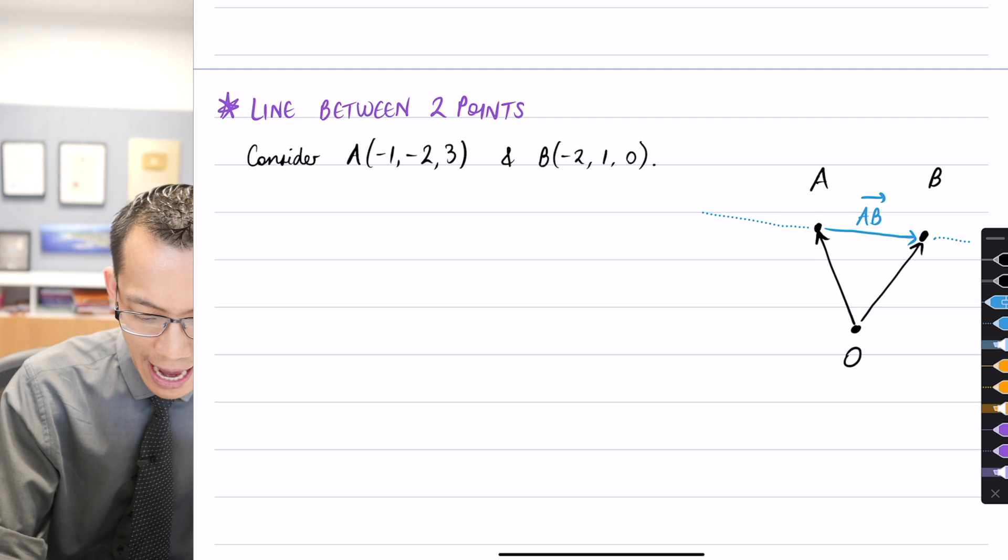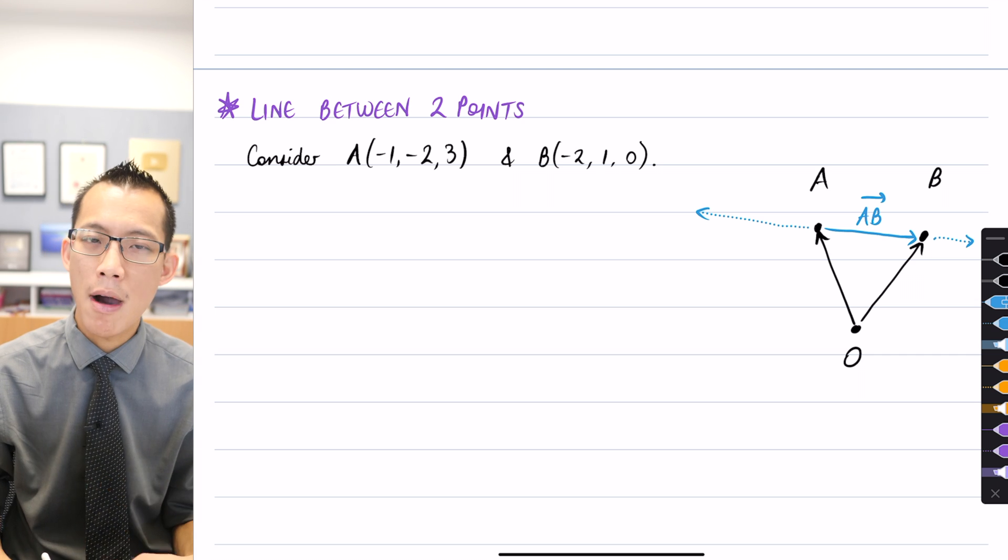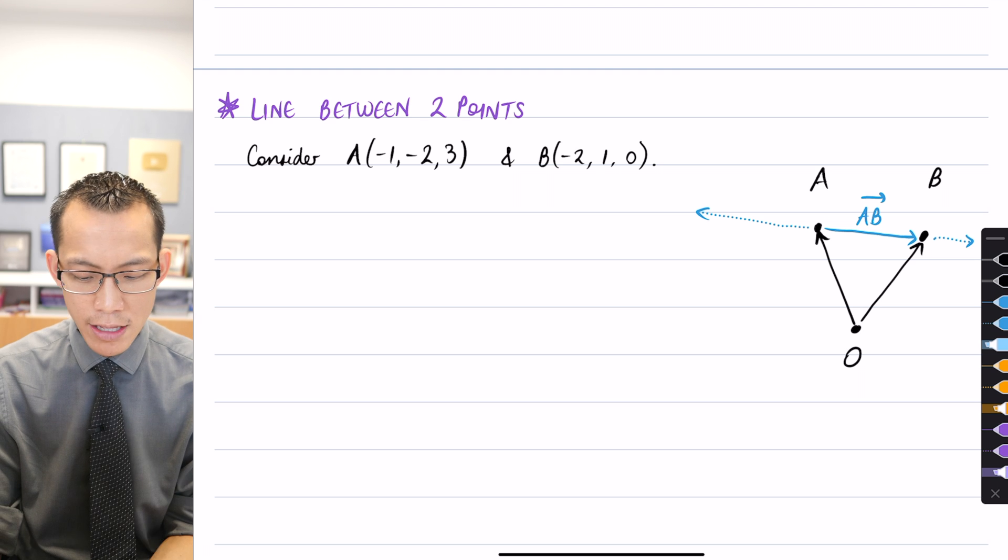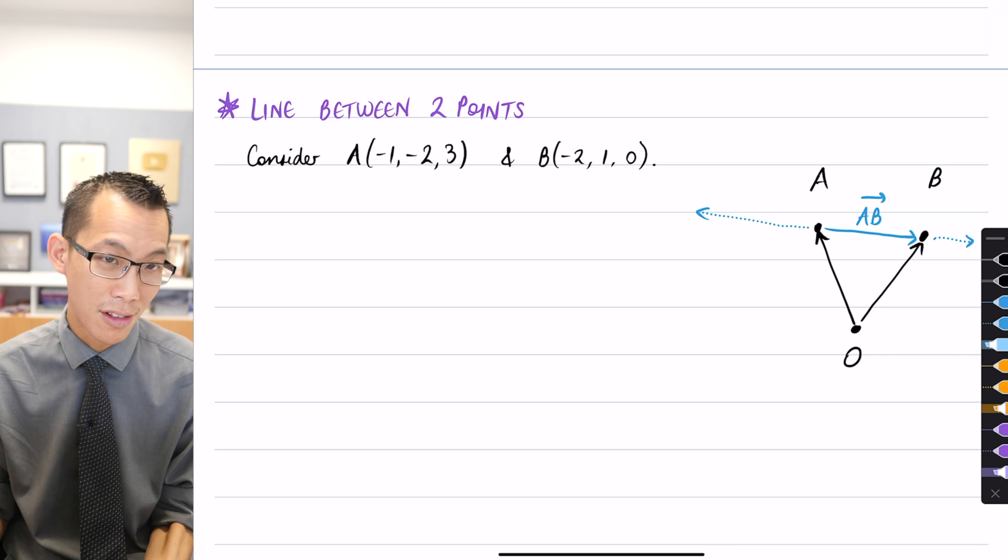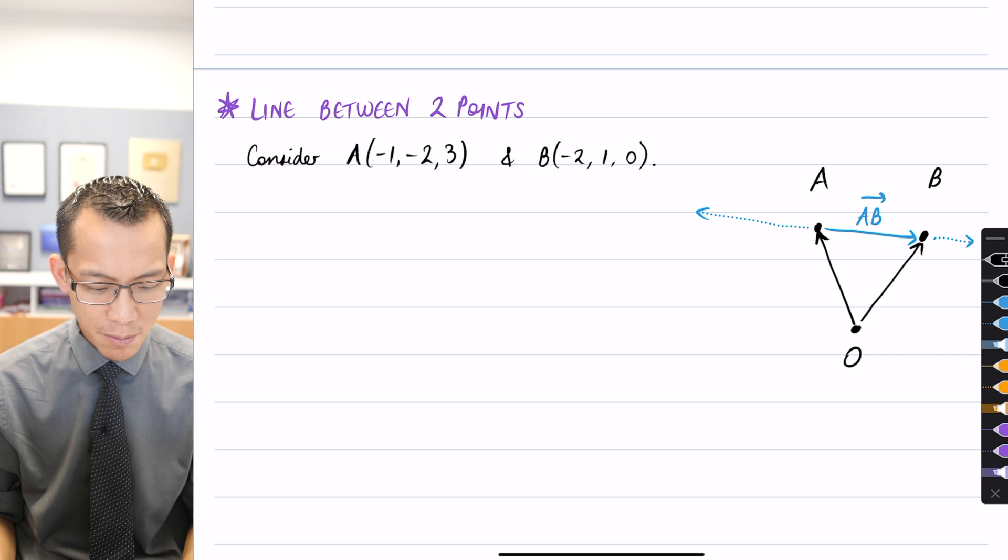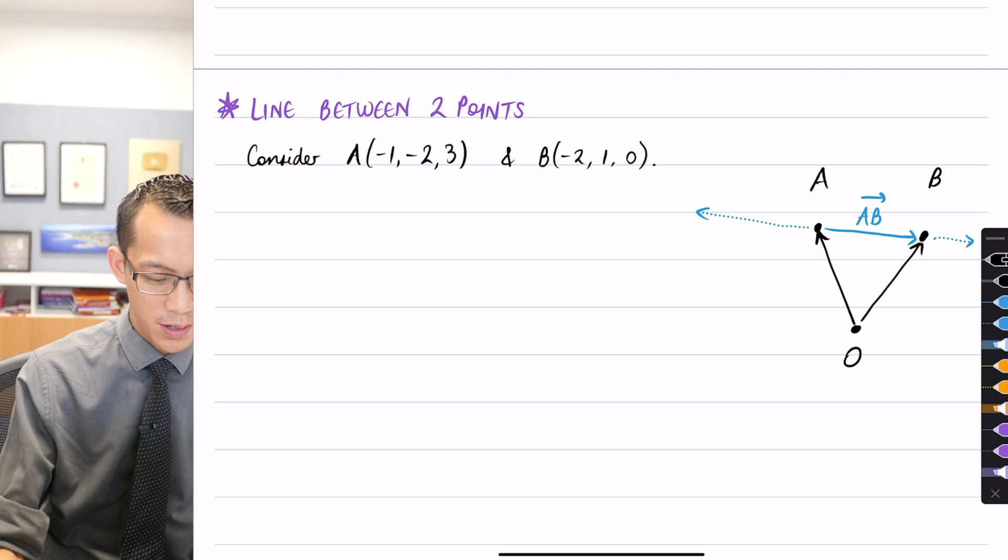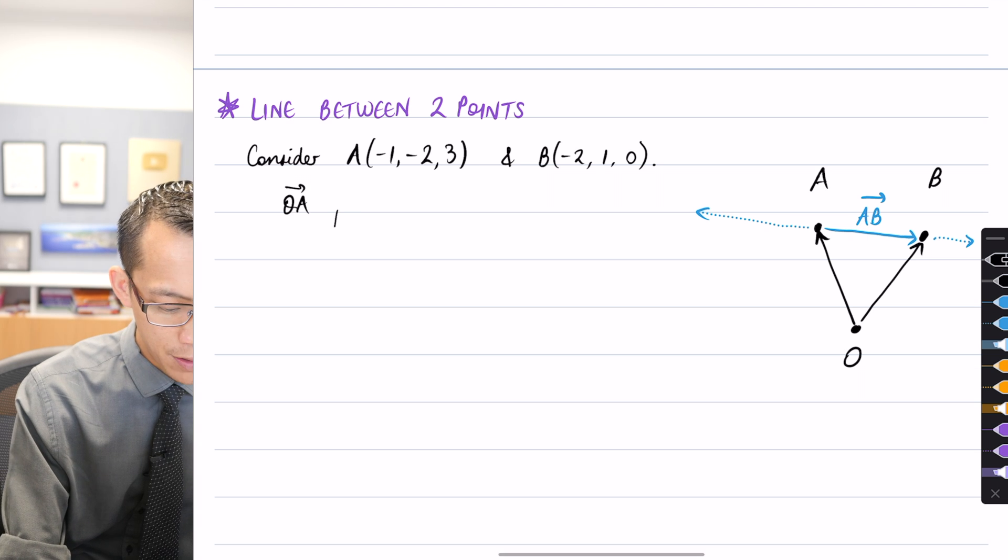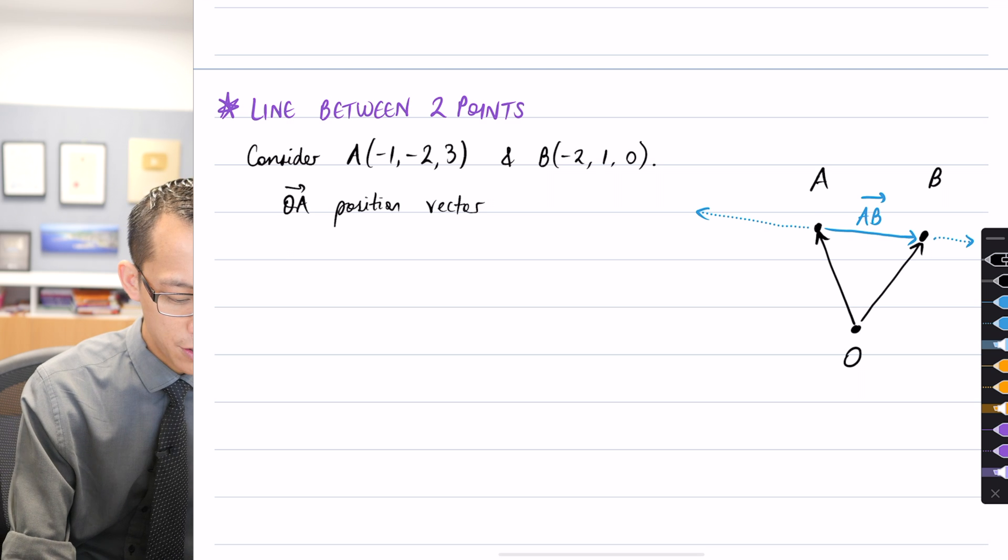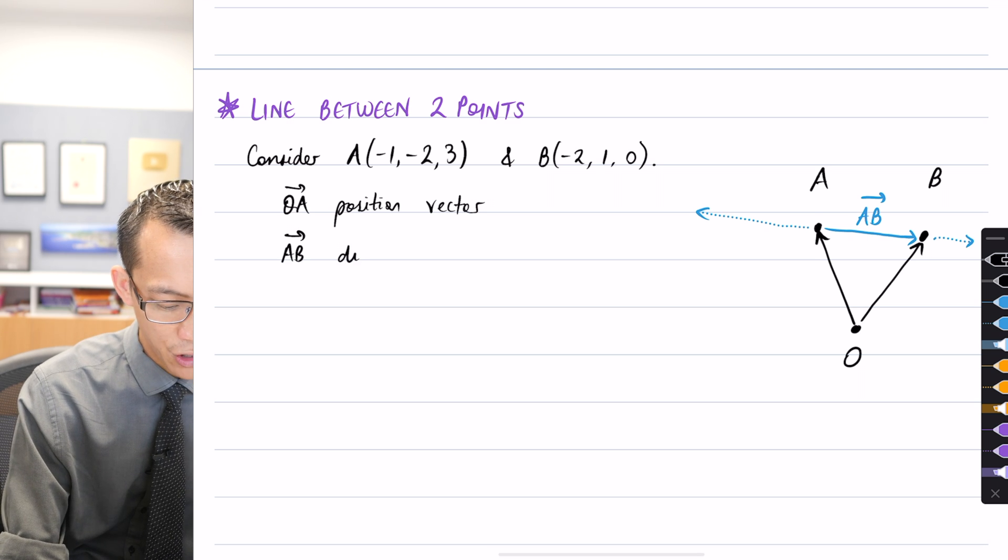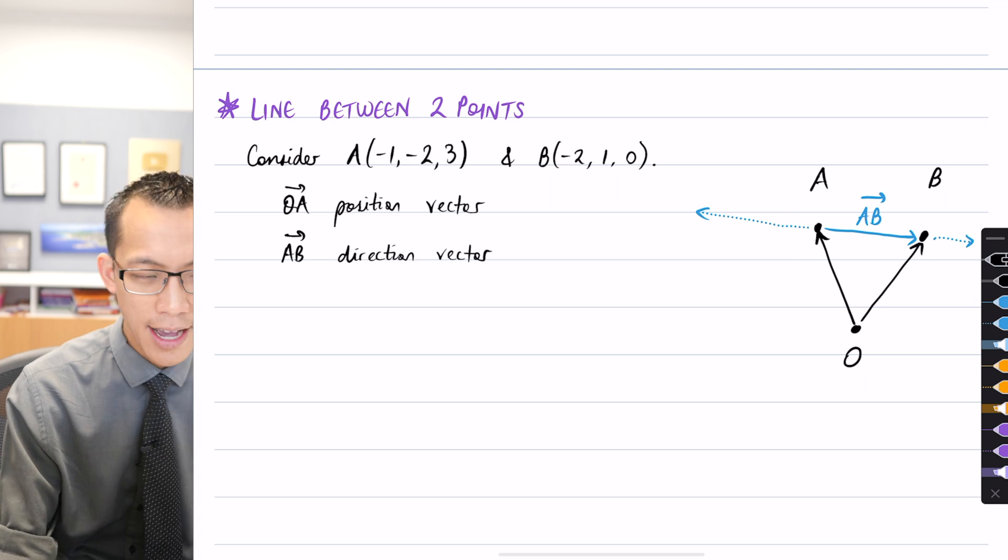Yep, that's the direction because the whole line, if I extended AB, would go like so. You can see AB is facing in the direction of the whole line. When I think about what my position vector will be, I could choose either—I could choose OA or I could choose OB, because A and B are both on the line by definition.